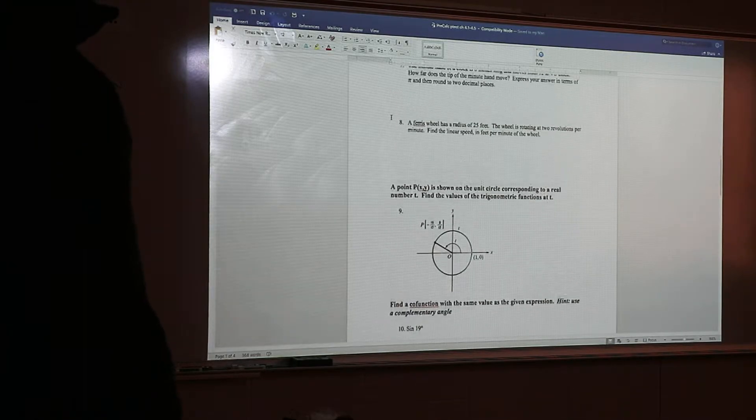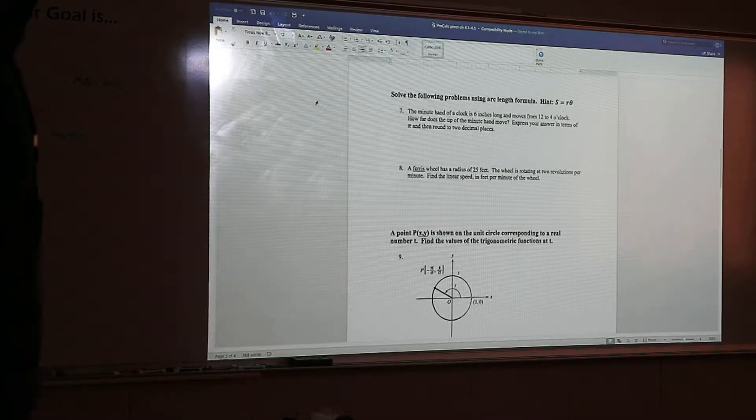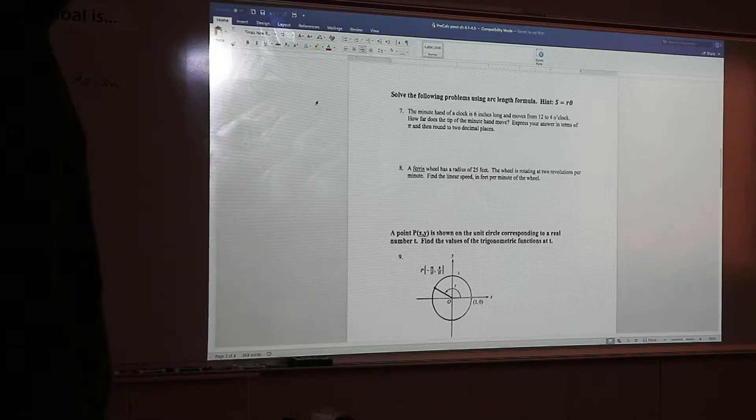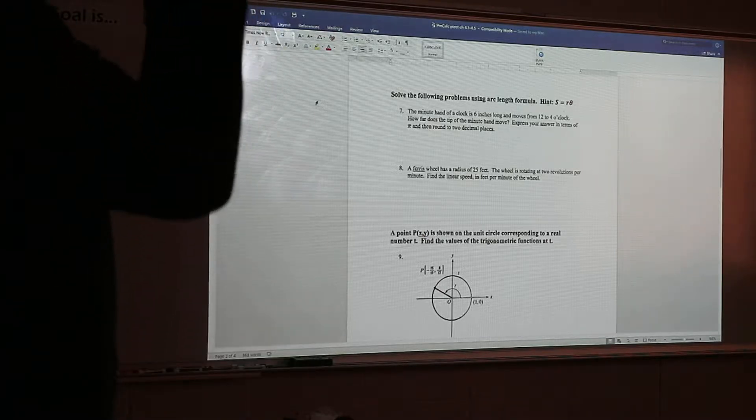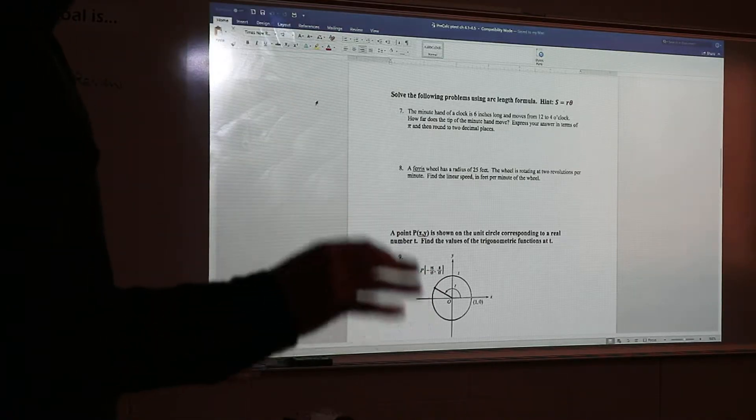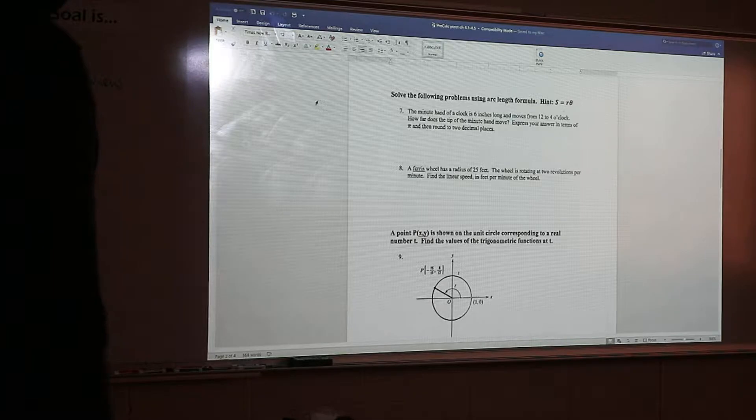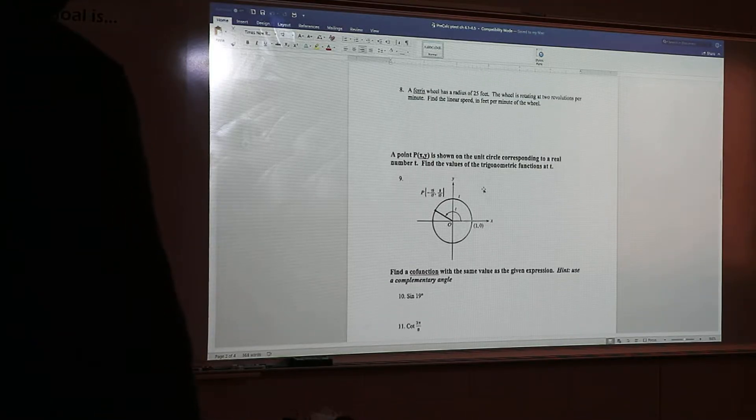Number seven and eight. The formula is already printed on the test. That formula will not be on the board. The S equals R theta. It's already on your practice guide. It'll be there on the test day. I'll make sure of it. The thing is you have to remember, the angle theta needs to be in radians. You have to convert it. Then the radius is R, and then the S is the arc length.